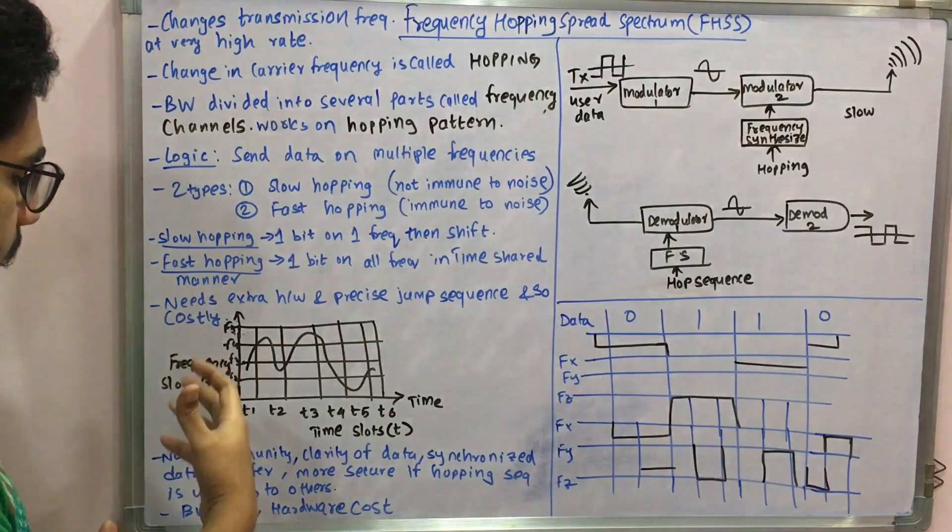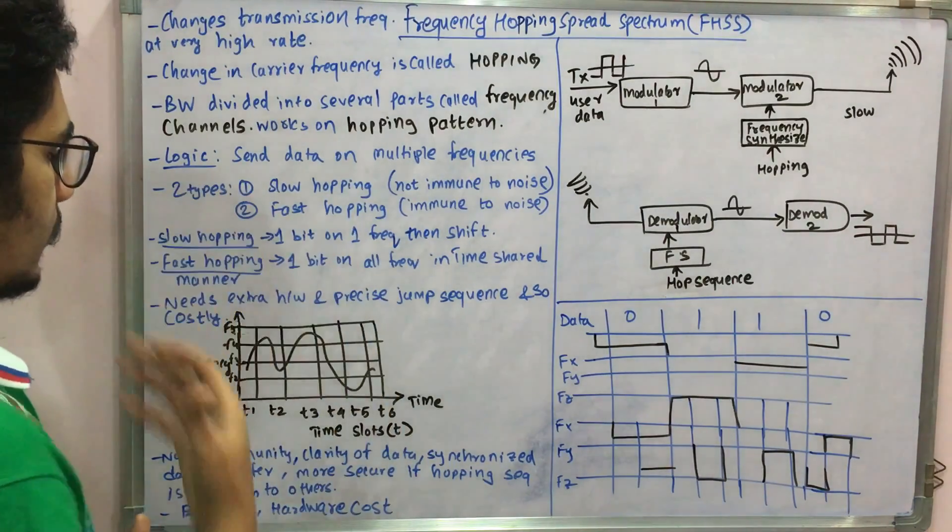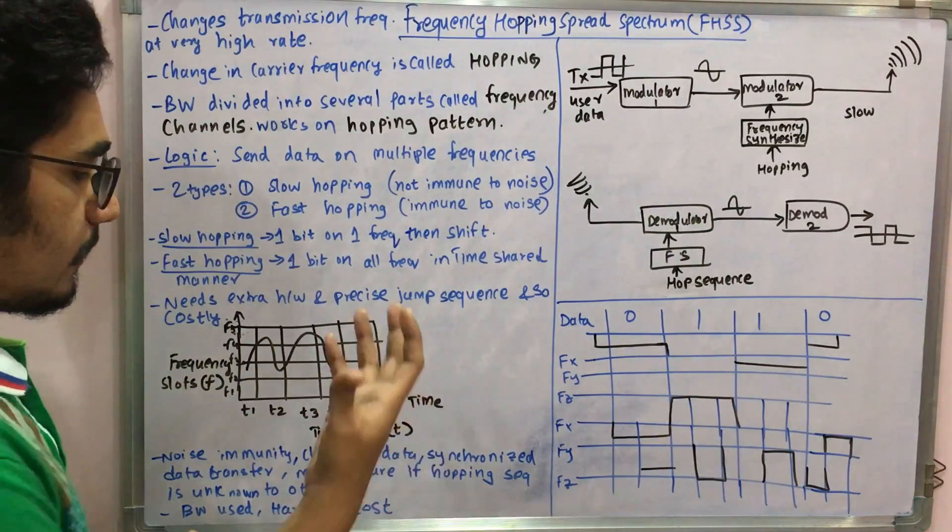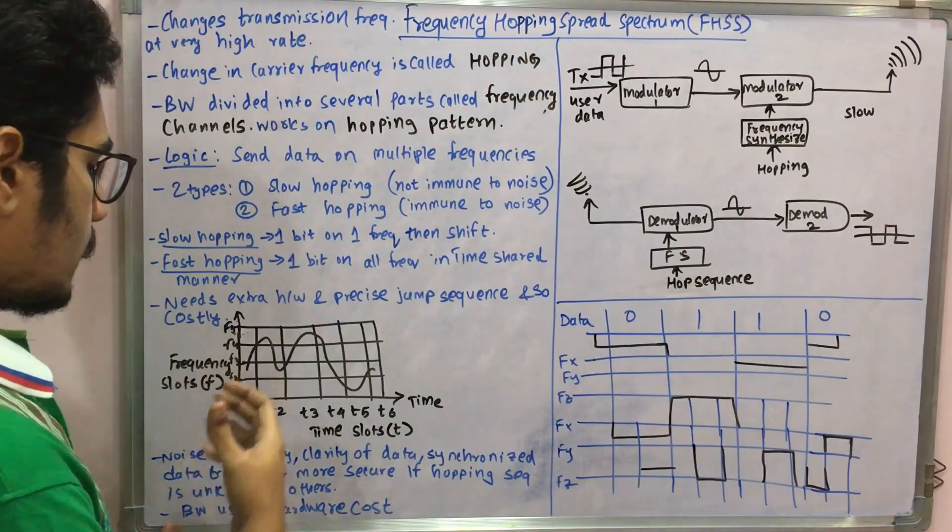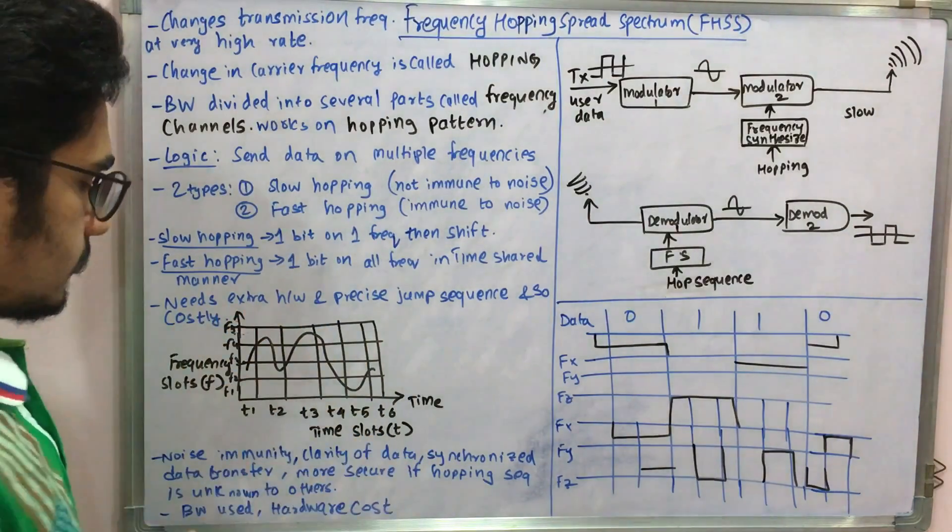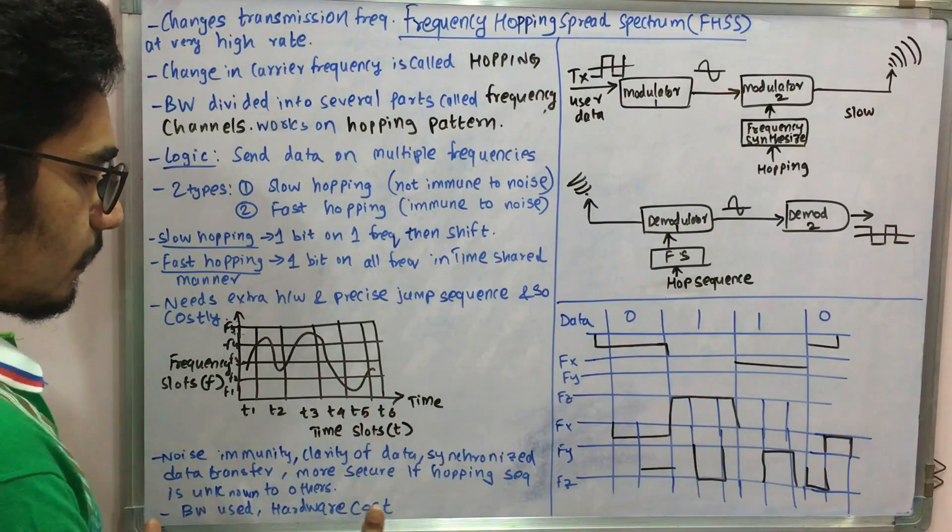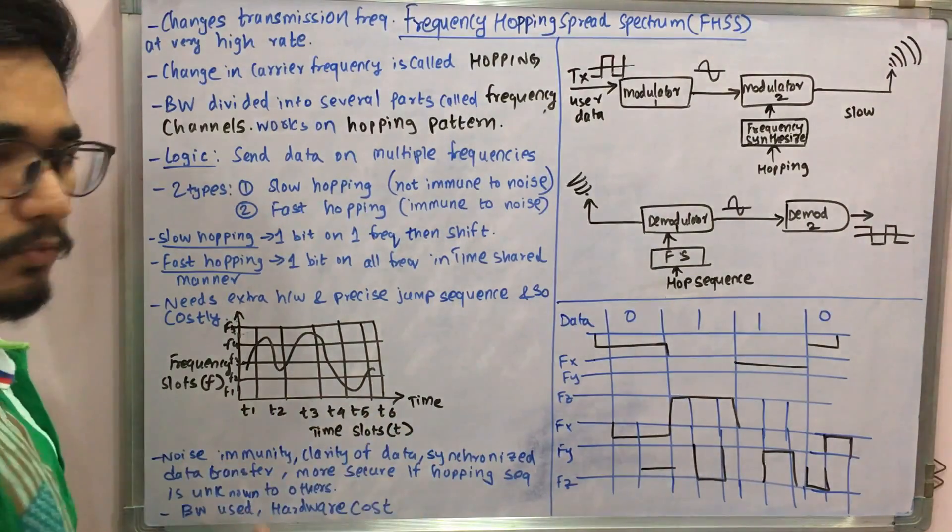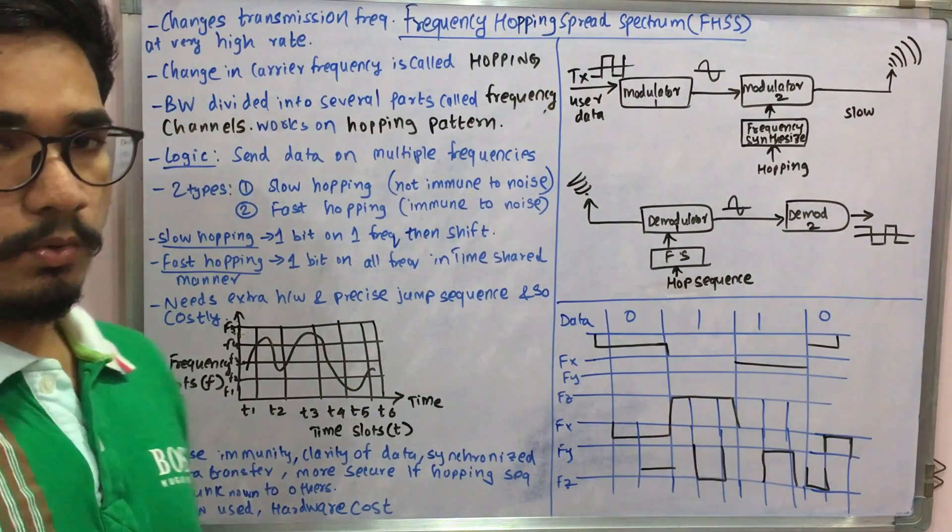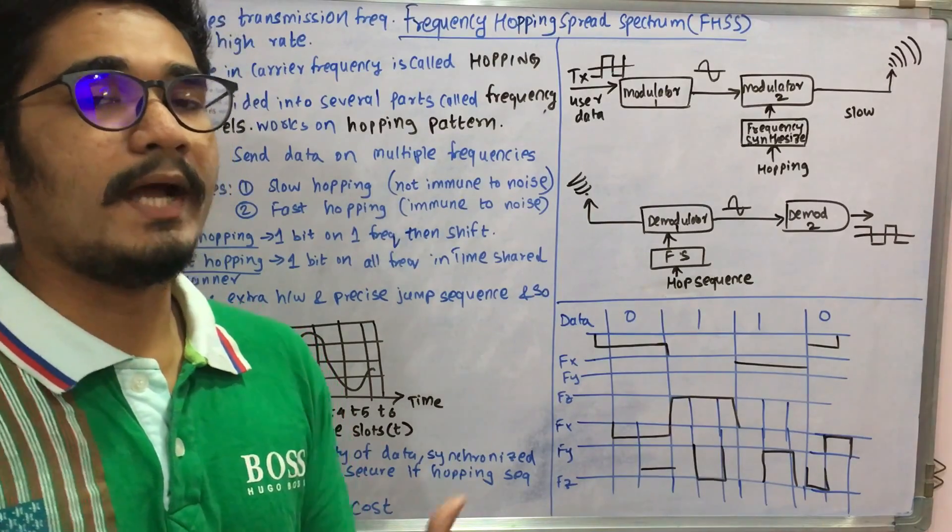It has some perceived advantages like noise immunity in fast hopping, clarity of data is much more, and synchronized data transfer. It's costly and more secure if the hopping sequence is unknown to others. If the pattern is not known to the user, then it becomes more secure.